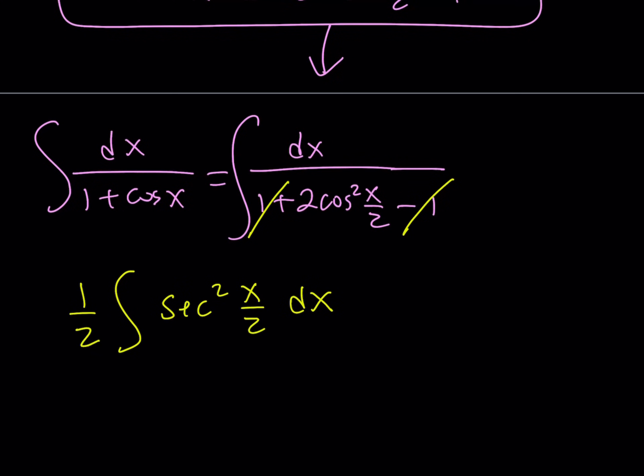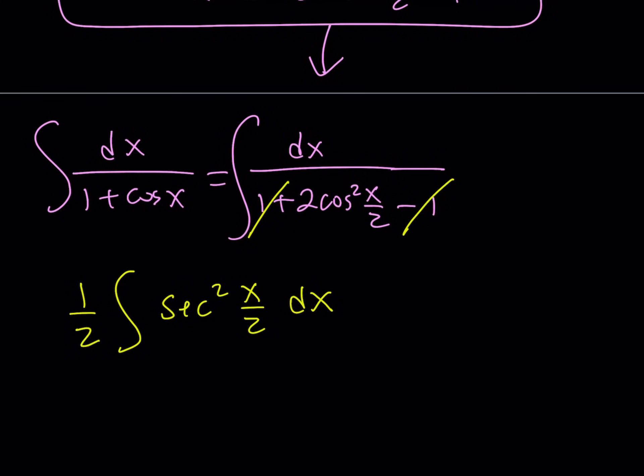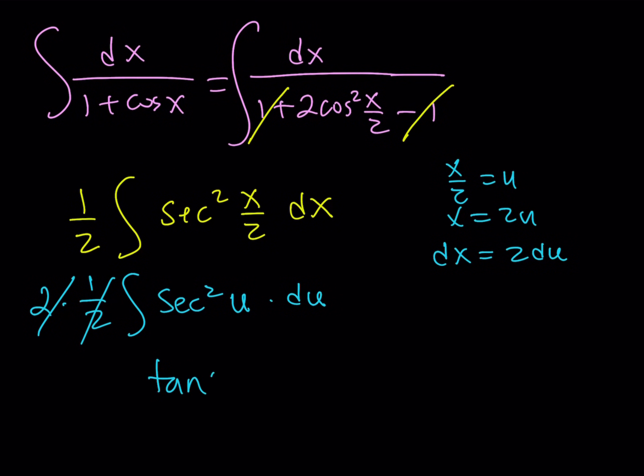The integral of secant squared is tangent because the derivative of tangent is secant squared. But we have an x over 2. If this bothers you, do a quick u substitution, say x over 2 equals u, x equals 2u, and dx is 2du. So we have 1 half of secant squared u times 2du. The integral of secant squared is tangent u plus c. Don't forget the constant.